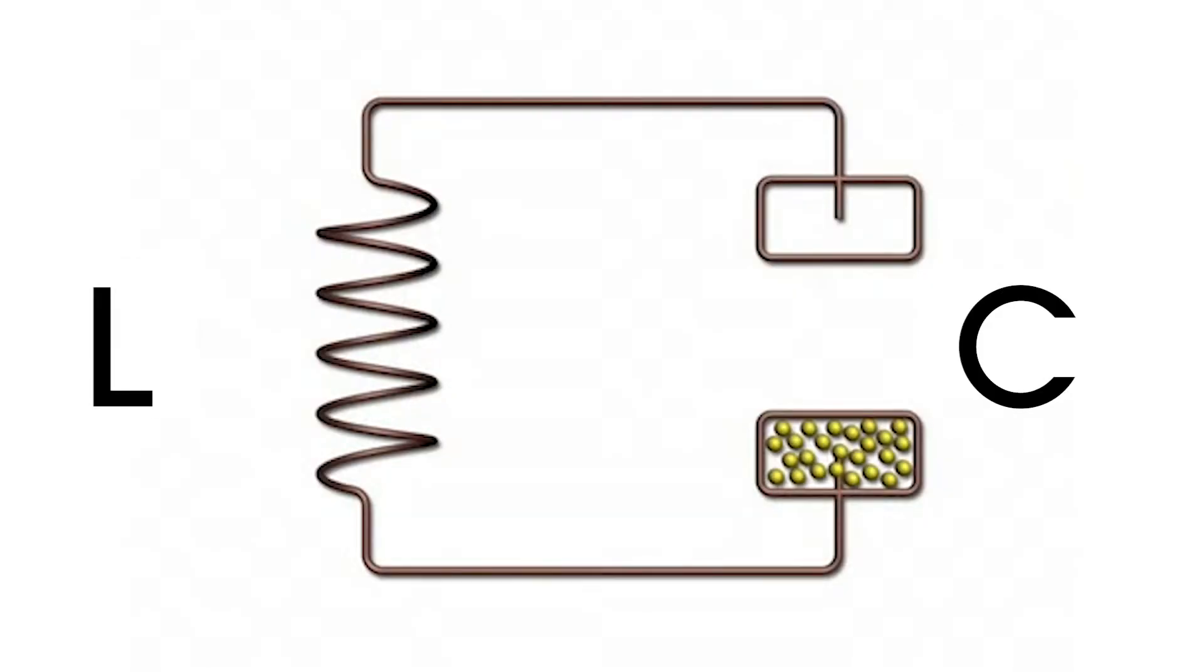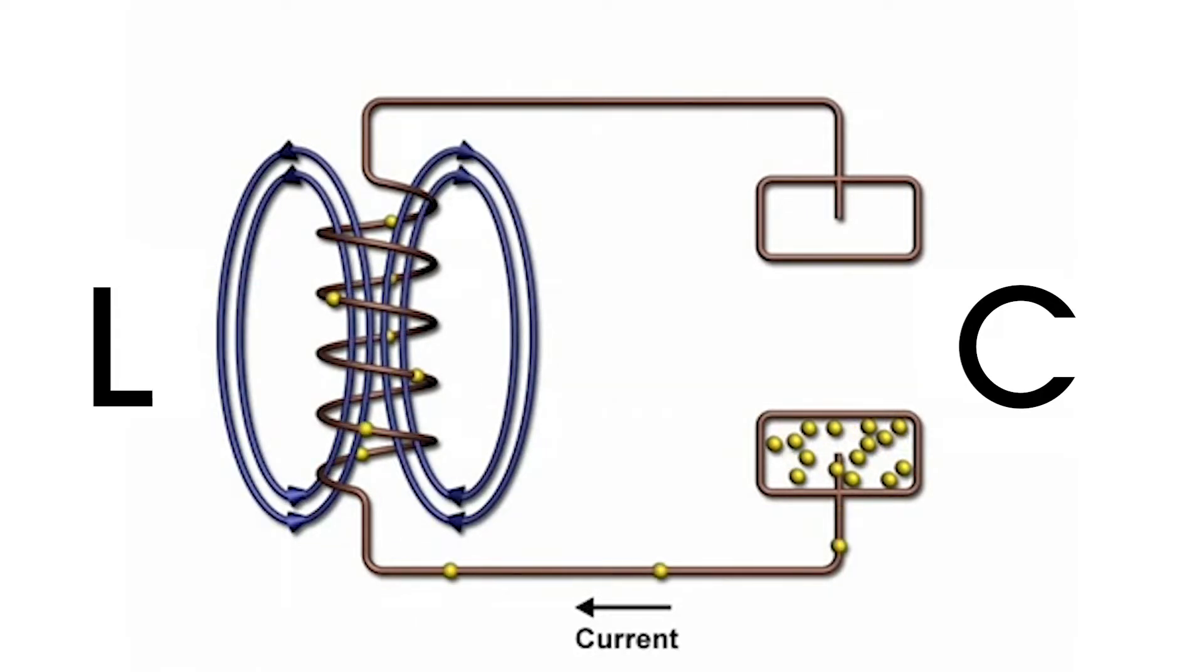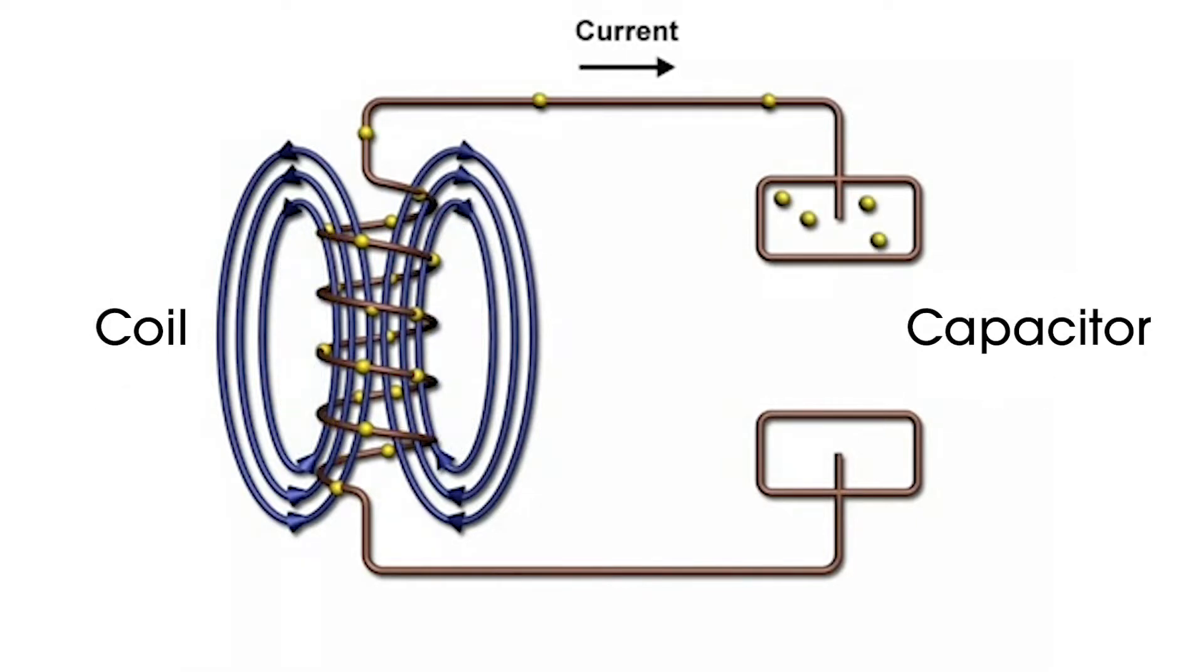The Tesla coil is basically a resonant transformer with two tuned LC circuits. The L in these circuits is inductance, basically a coil of copper wire. C is the capacitor, a device that stores energy.